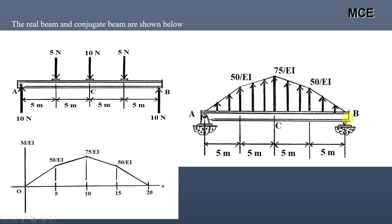To find the slope at B, we find the shear (vertical reaction) at B in the conjugate beam — this is numerically equal to the slope at B in the real beam. To find the displacement at C, we find the moment at C in the conjugate beam, which is numerically equal to the displacement at C in the real beam.